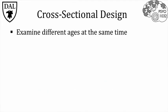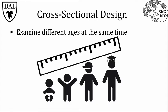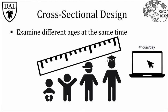A cross-sectional design examines different age participants at the same time. Once groups of participants are identified and recruited, the behavior of interest is measured – for example, the amount of time spent on the internet. Cross-sectional designs are the simplest of the developmental research design types, because all participants can be tested at once.